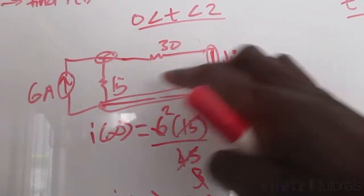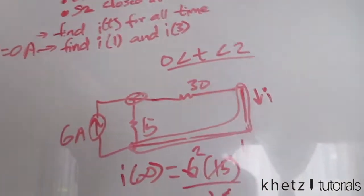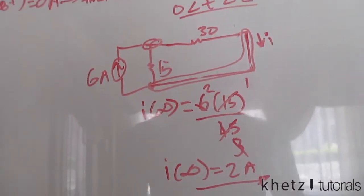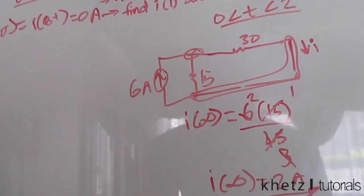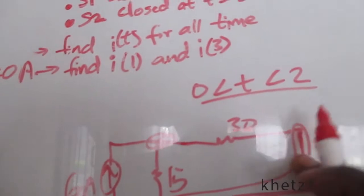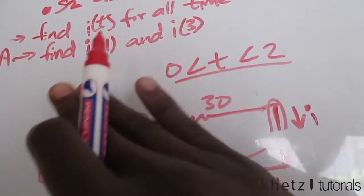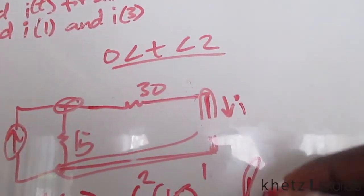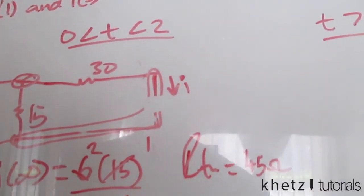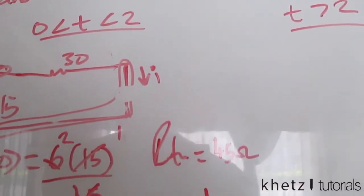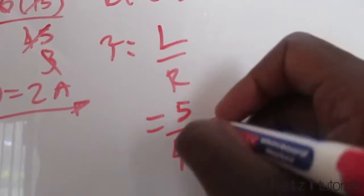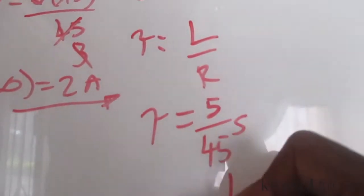To find Rth, we remove the independent source and look from the storage element's terminals. We're left with 15 Ω and 30 Ω in series, giving Rth = 15 + 30 = 45 Ω. The time constant for this RL circuit is τ = L/R = 5 H / 45 Ω = 1/9 seconds.